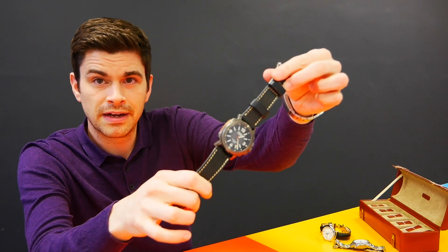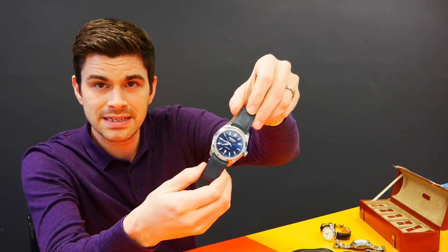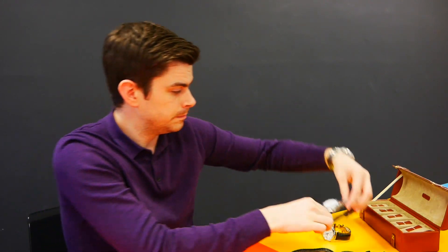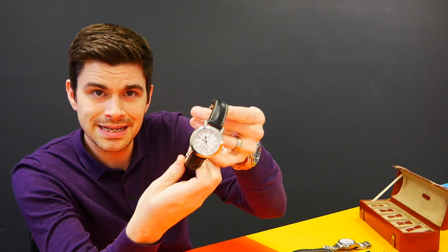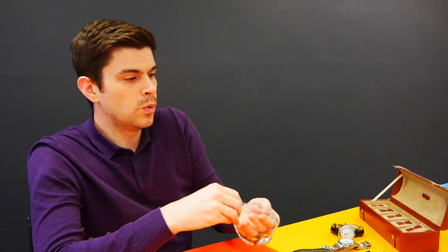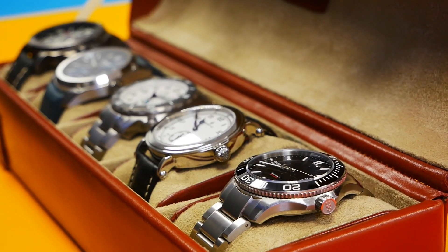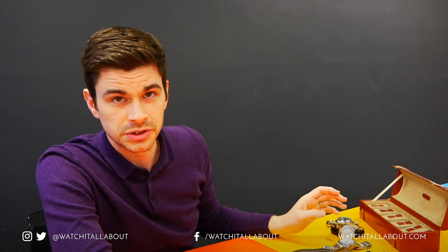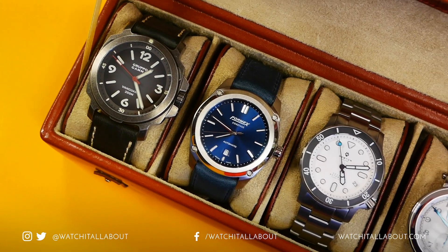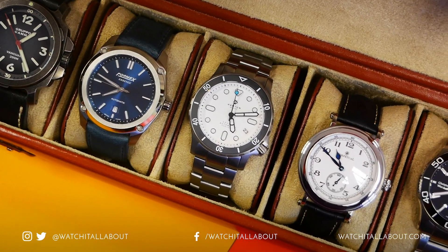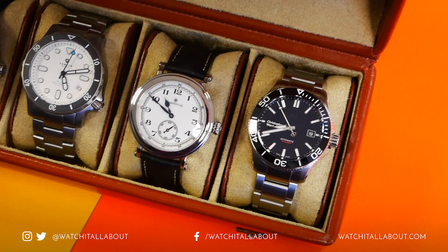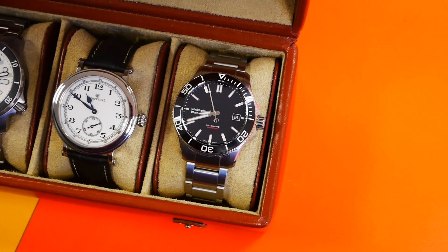So, there we go. So, quick recap. Number five, Gruppo Gamma Vanguard. Number four, the Formex Essence. Number three, the Hampton Kraken H2. Number two was the Perpetual SC-03. And number one, the Christopher Ward Trident Mark III. So, thanks for watching guys. I'd highly recommend any of these five watches really. Obviously, there's a variety of budgets there as well. Cheapest being £150 to £200, all the way up to the most expensive around £800. That's the Christopher Ward. Really, you can't go wrong with any of them. So, that was my top five watches of 2019.